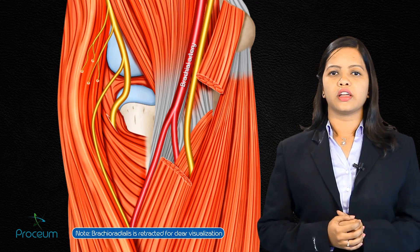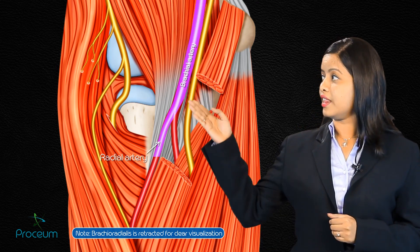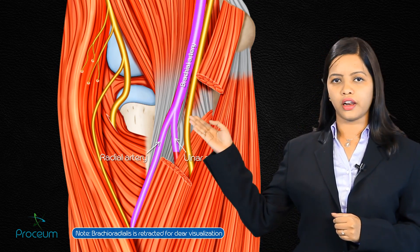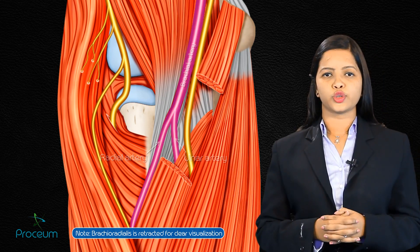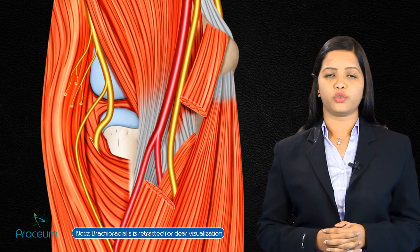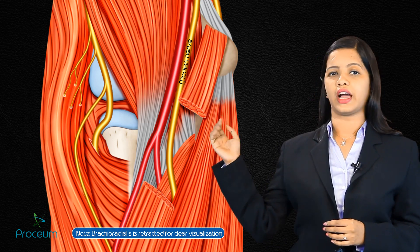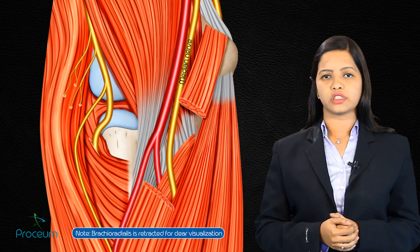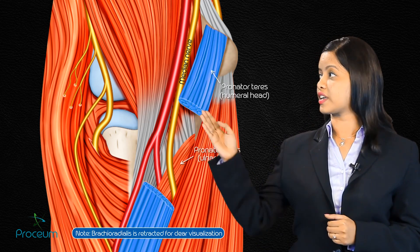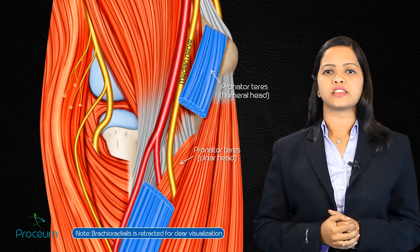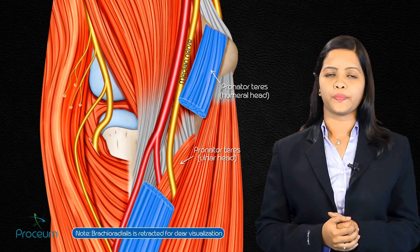The brachial artery bifurcates into the radial and ulnar arteries at the apex of the fossa. The median nerve lies medial to the brachial artery; it leaves the cubital fossa between the two heads of the pronator teres muscle and supplies the majority of the flexor muscles of the forearm.